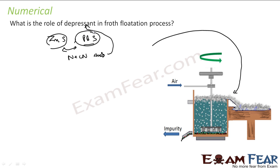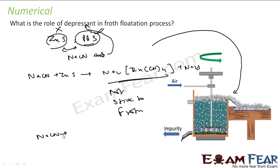So NaCNS will selectively allow PbS to come in contact with the froth, but it will not allow ZnS to come in contact with the froth. How? See, NaCNS will actually react with ZnS to form a complex, and this complex will not stick to froth.